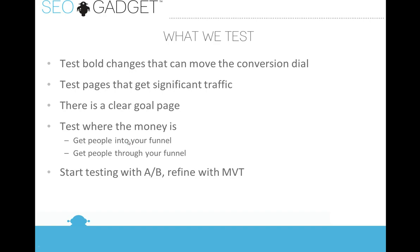But before we get in, let's just take a second to talk about what we actually test. The decision on what we're going to test is really an important part of what we get out at the end. We tend to test the kind of bold changes that we think can have a big impact on conversion. Part of that is testing pages that have a significant amount of tracking, and pages where there is a clear next page to be the goal. We will always be looking to test where the money is — basically where people enter the funnel. Those pages are key for us to test, and the pages in the funnel that move people through your sales funnel are areas we will test.